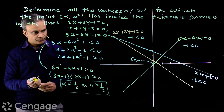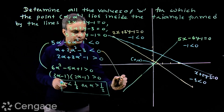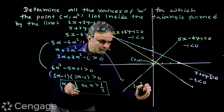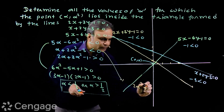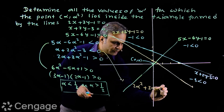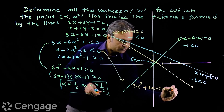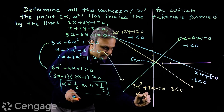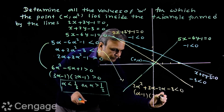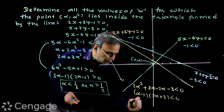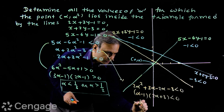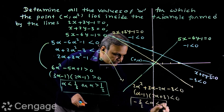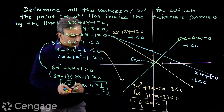Now solving the second inequality: 2α² + α - 3 < 0. We write this as 2α² + 3α - 2α - 3 < 0, so the factors are (α - 1)(2α + 3) < 0, giving us -3/2 < α < 1. This is the second set of values of alpha.